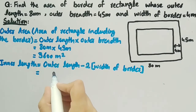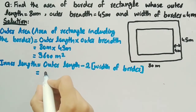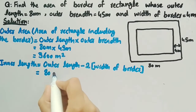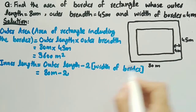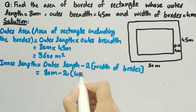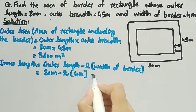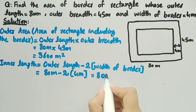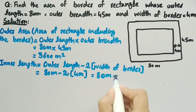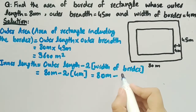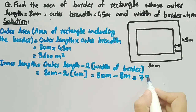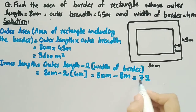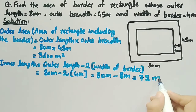Outer length is 80 meters minus two times the width of border which is 4 meters, which is equal to 80 meters minus two times four, that is 8 meters. 80 minus 8 is equal to 72, so inner length is equal to 72 meters.